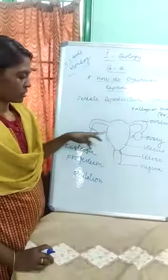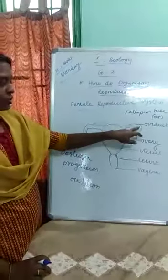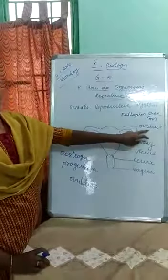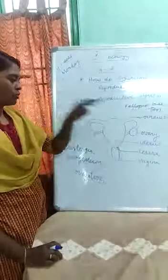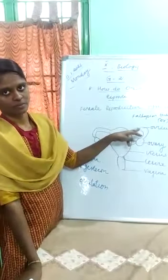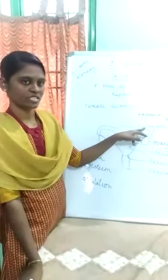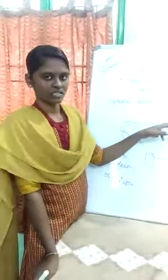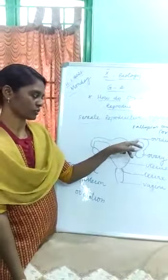A small tube-like structure arises from the ovary. It is called the oviduct, otherwise called the fallopian tube. Here only the fusion of male and female gametes takes place — that is, fertilization takes place inside the oviduct. This is an important exam question.